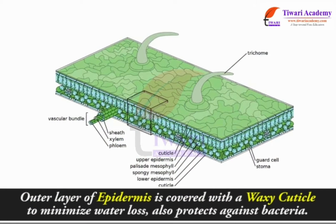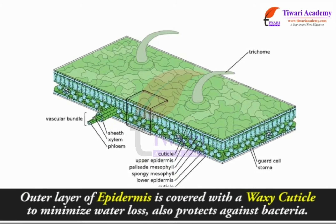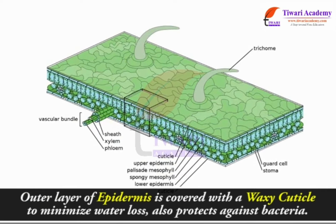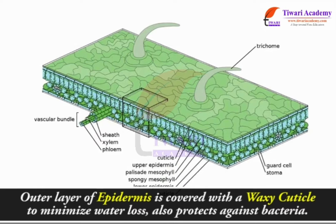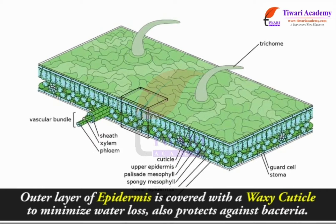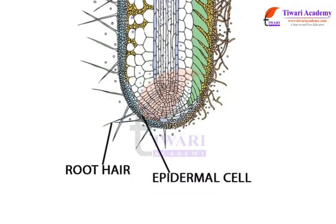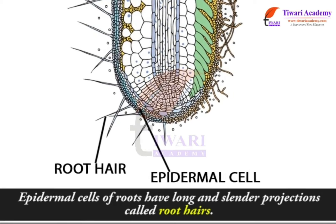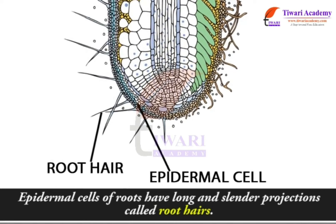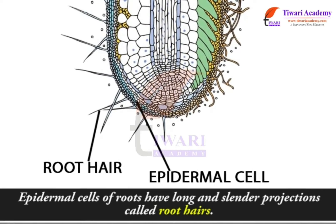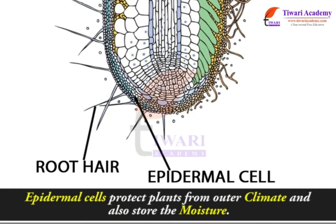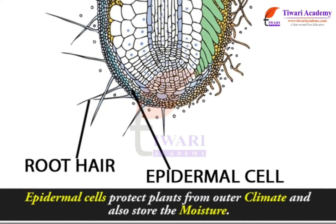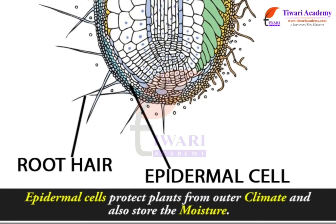The outer layer of epidermis is covered with a waxy cuticle to minimize water loss and to protect against bacteria. Epidermal cells of roots have long and slender projections called root hairs. Epidermal cells protect plants from outer environmental conditions and also store moisture.